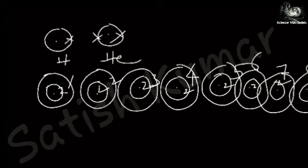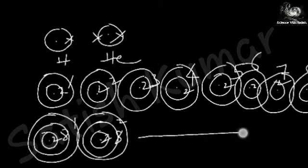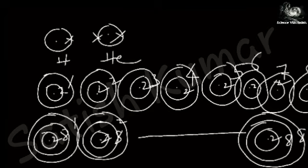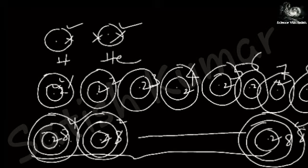Moving to the third period: sodium has 2, 8, 1 electrons in the three shells. Magnesium has 2, 8, 2. The last element of the third period is argon, which has 2, 8, 8 in its three shells. So the first period elements have only 1 shell, the second period elements from lithium to neon have 2 shells, and the third period elements from sodium to argon have 3 shells.